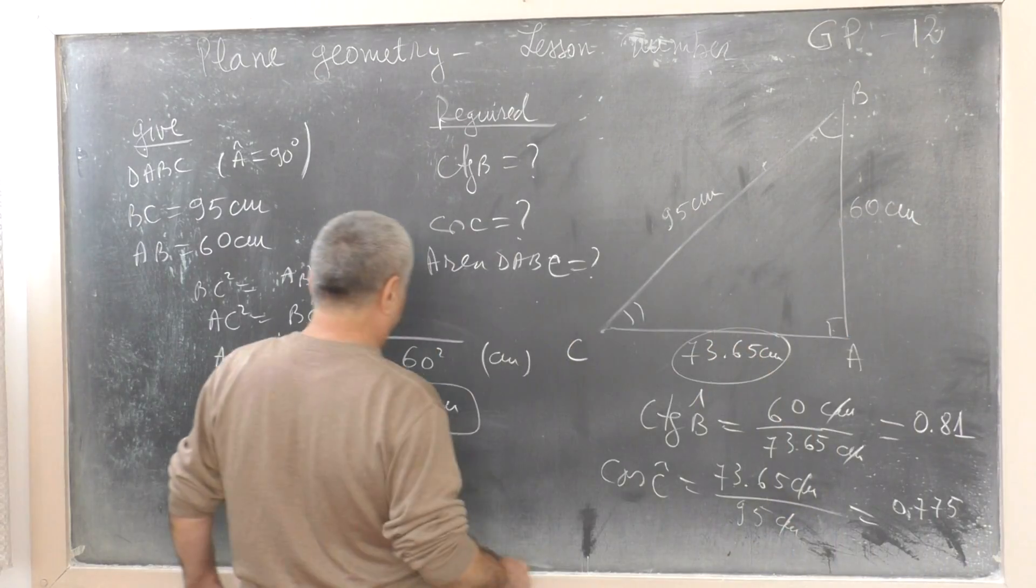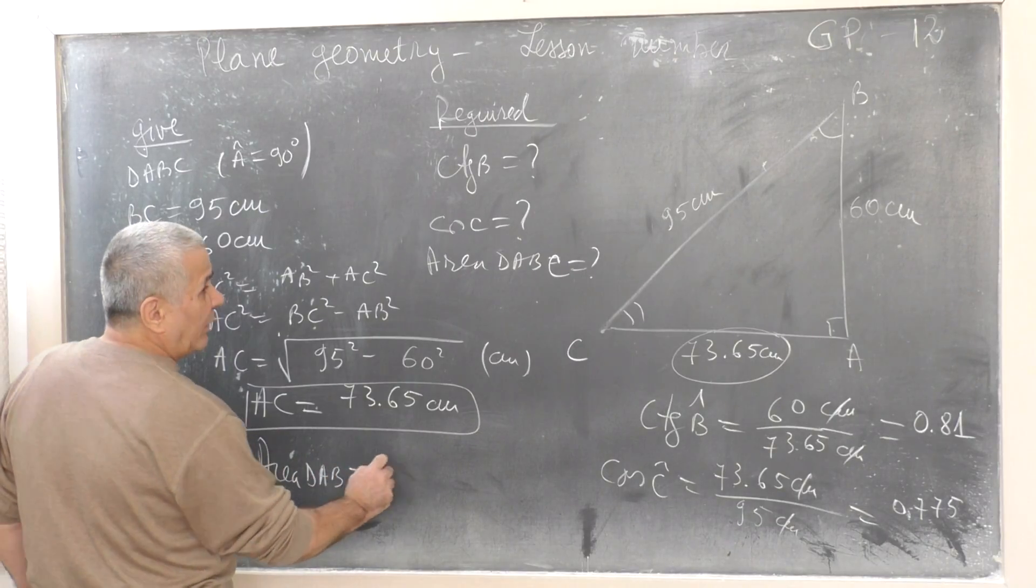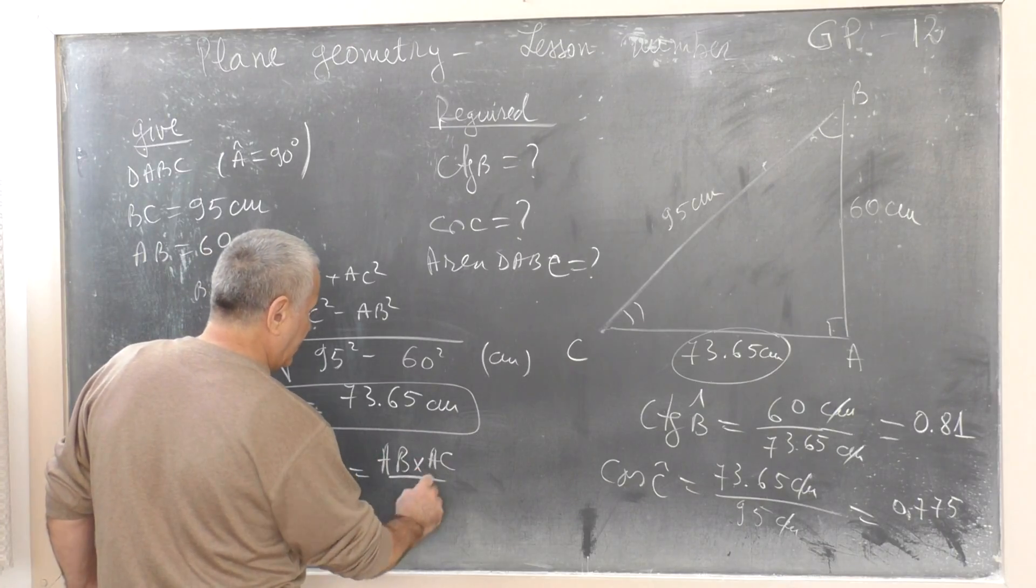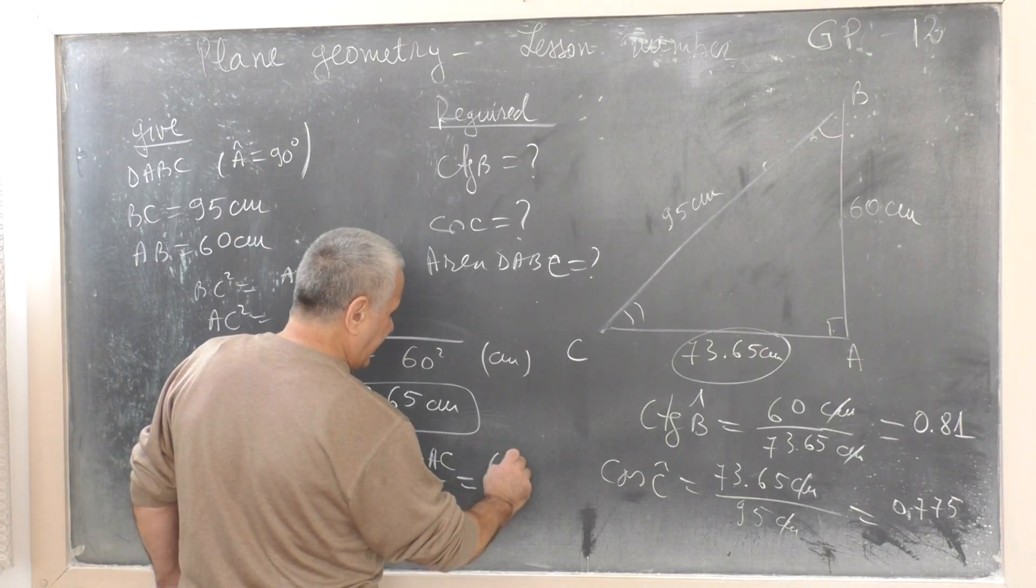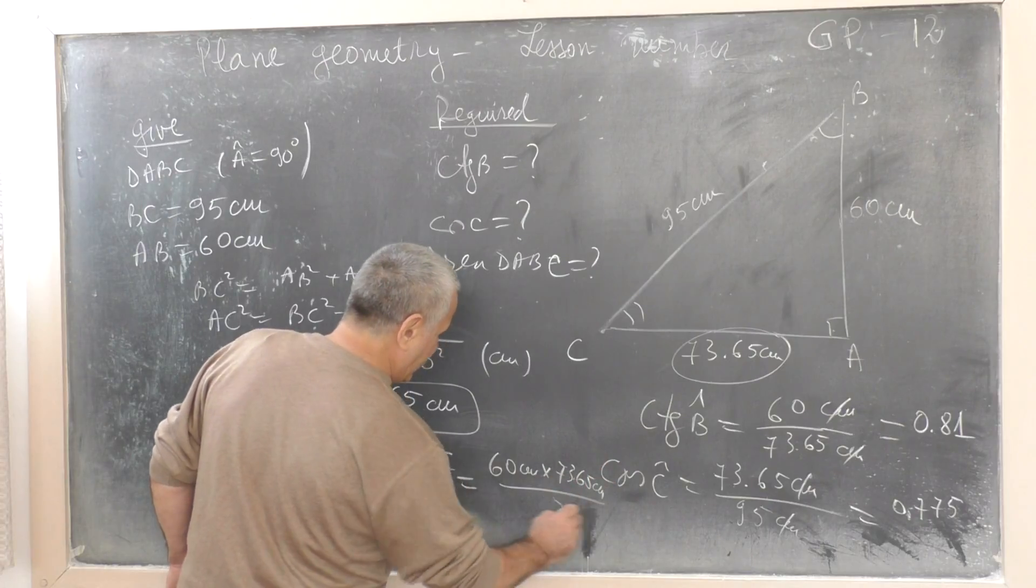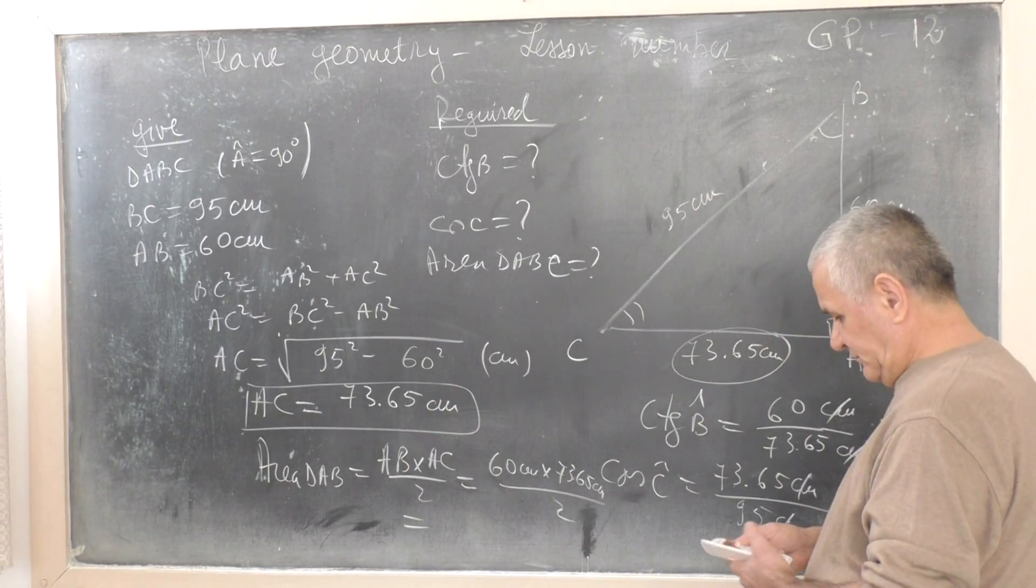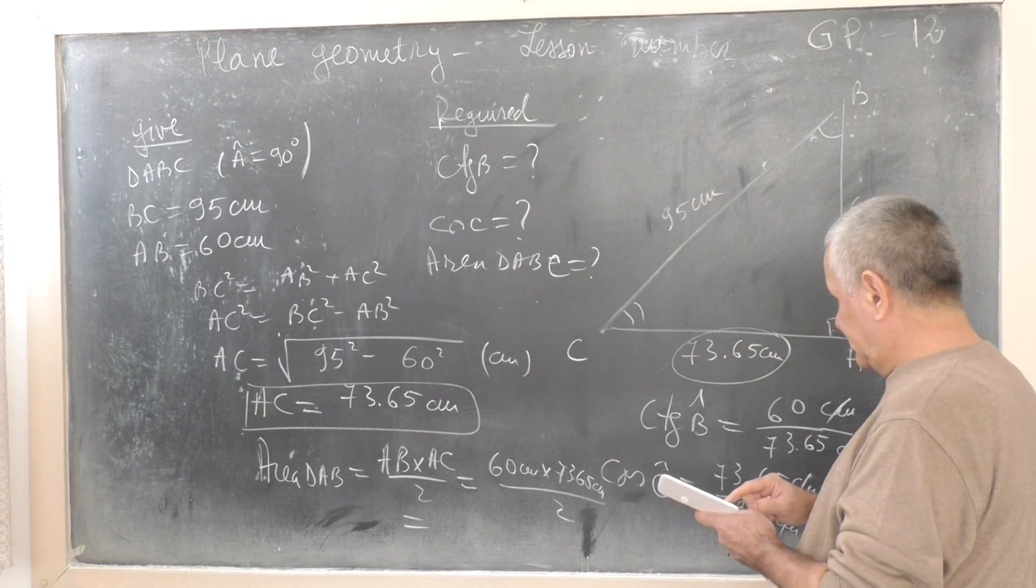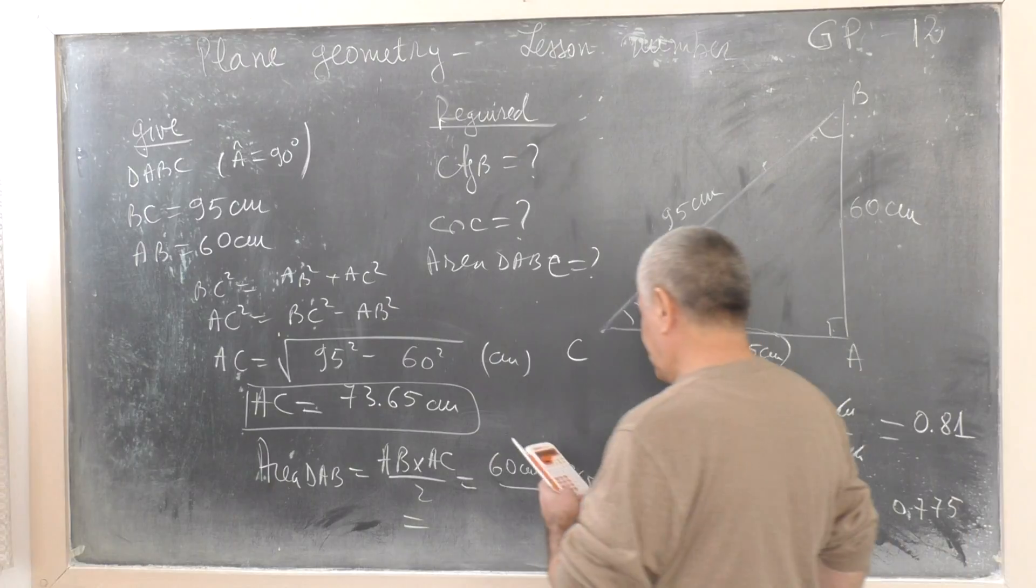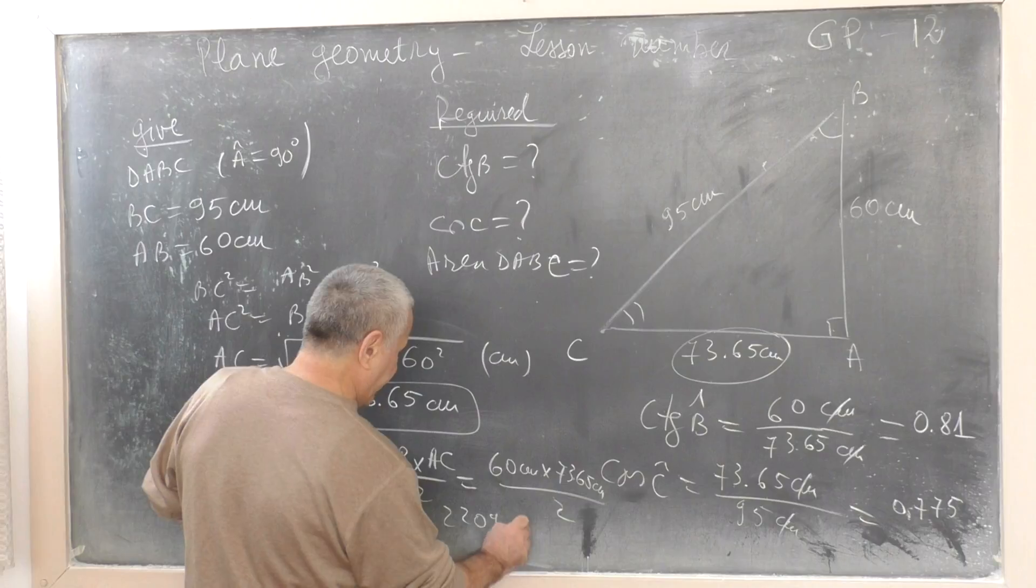Area of triangle ABC equals AB times AC divided by 2. That's 60 cm times 73.65 cm divided by 2, equals 2,197.5 square centimeters.